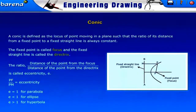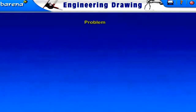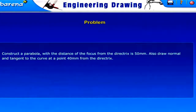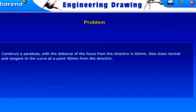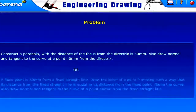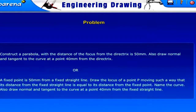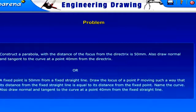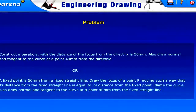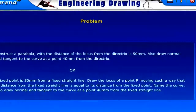Problem: Construct a parabola with the distance of the focus from the directrix equal to 50 mm. Also draw normal and tangent to the curve at a point 40 mm from the directrix. Alternatively: a fixed point is 50 mm from a fixed straight line. Draw the locus of a point P moving such that its distance from the fixed straight line equals its distance from the fixed point. Name the curve and draw normal and tangent at a point 40 mm from the fixed straight line.